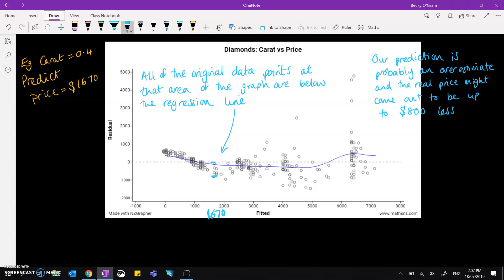So our prediction is probably an overestimate and the real price could come out to be anything 800 below that. Another way you could use this is talking about the confidence in your prediction.